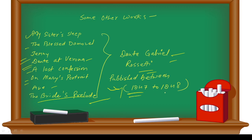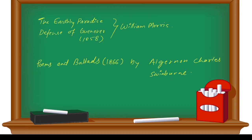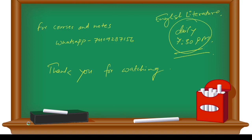The Earthly Paradise, Defense of Guenevere from 1858—these are works by William Morris. Poems and Ballads, 1866, by Algernon Charles Swinburne. These are important works you should note down.